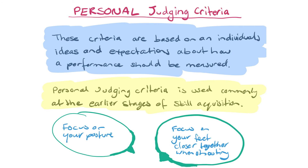Personal judging criteria are based on an individual's ideas and expectations about how performance should be measured. Personal judging criteria are commonly used at the earliest stages of skill acquisition — athletes in the cognitive or even associative stage. A coach may use personal judging criteria to encourage performance improvement or maintain motivation, highlighting things like posture or placement of body parts. For example, telling a basketballer to keep their feet closer together when shooting — personal comments not necessarily tied to objective outcomes, but useful for assessing skill level.